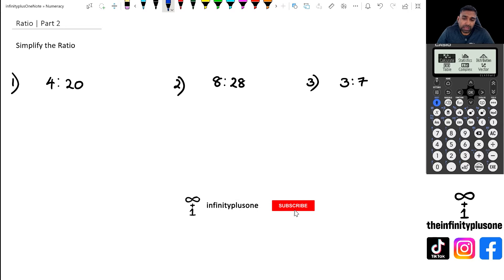Alright, so with simplifying ratios, it's kind of very similar to simplifying fractions really. It pretty much has the same idea behind it, but I'm going to show you folks the long method first and then I'll show you how the shortcut works as well.